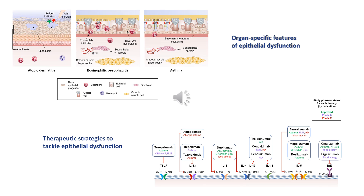In our paper, we discuss all the approved and investigational biological drugs for epithelial-driven allergic and inflammatory diseases. An example of these drugs is Tezepelumab, a human monoclonal antibody that blocks TSLP, approved for patients with severe and uncontrolled asthma, and currently under investigation for chronic rhinosinusitis and eosinophilic esophagitis.